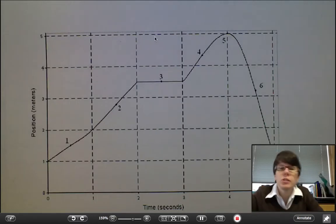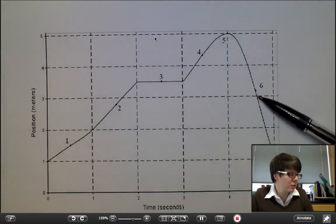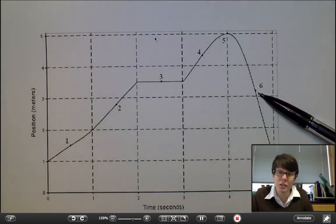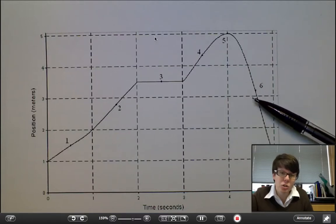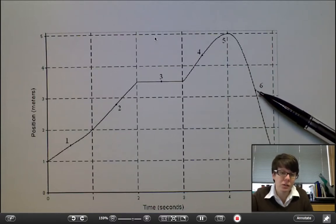This means that the sign, the direction on the velocity is irrelevant. So for instance, a lot of people spotted that this has a negative velocity. That's still the largest speed on the graph because it's got the greatest slope.